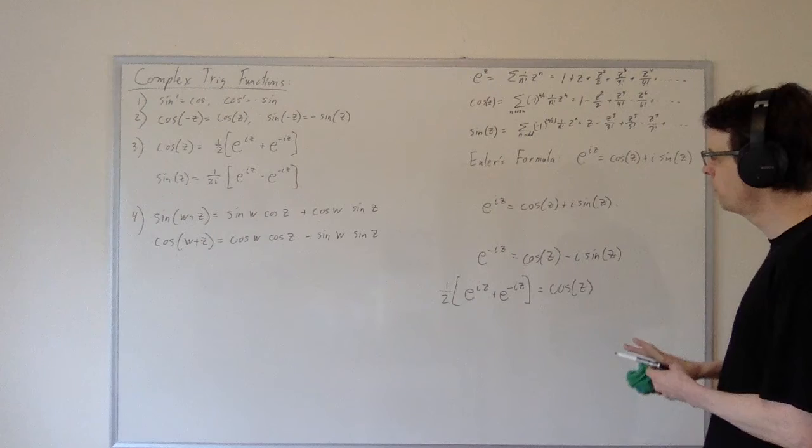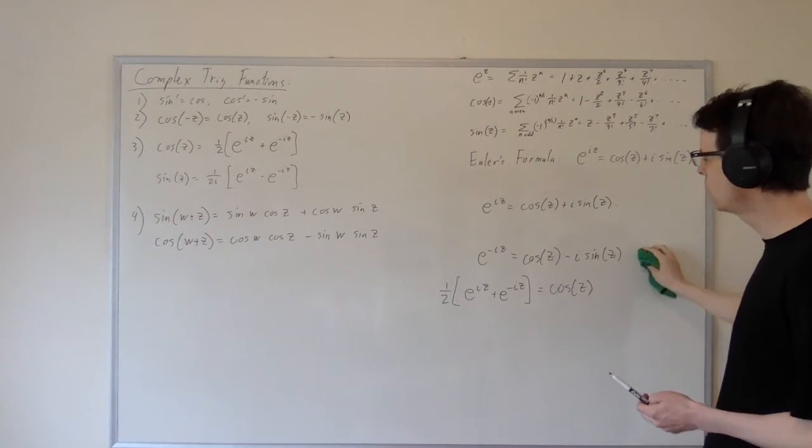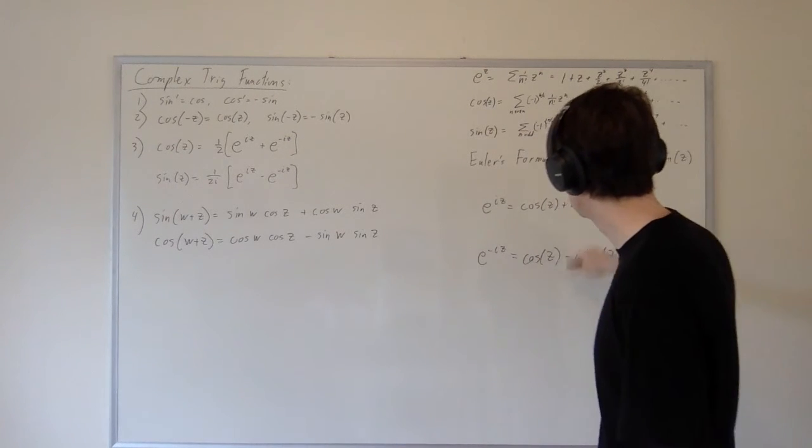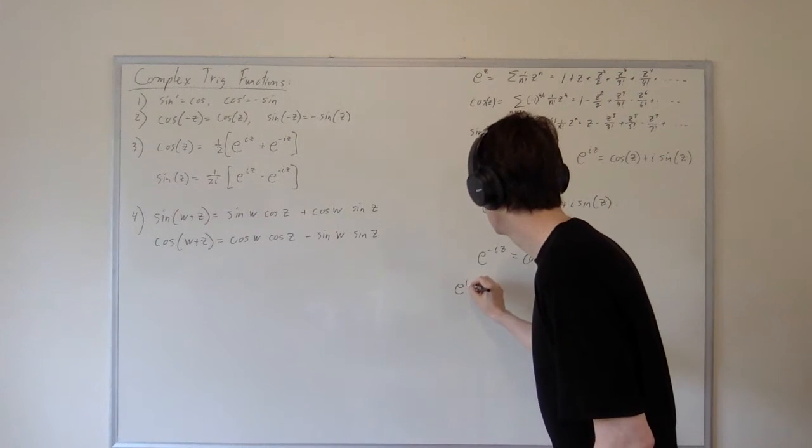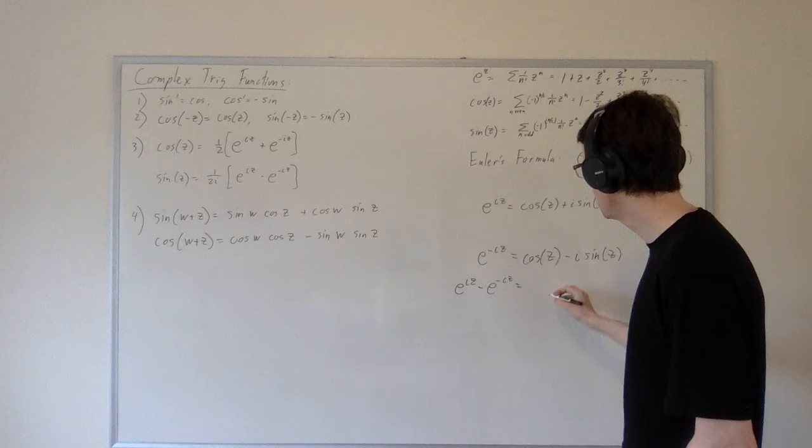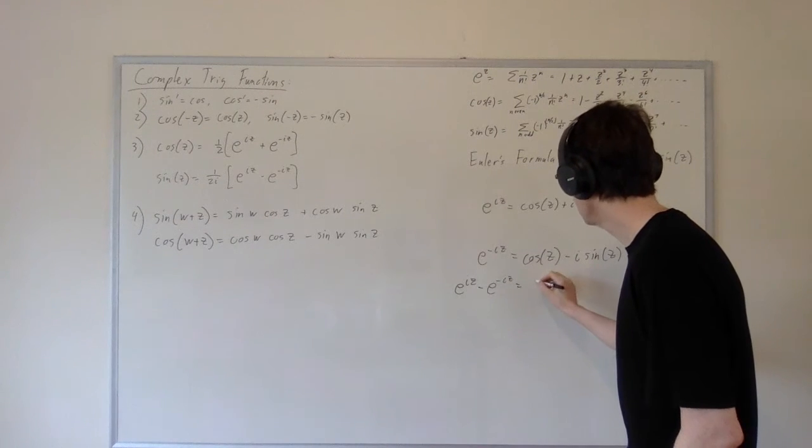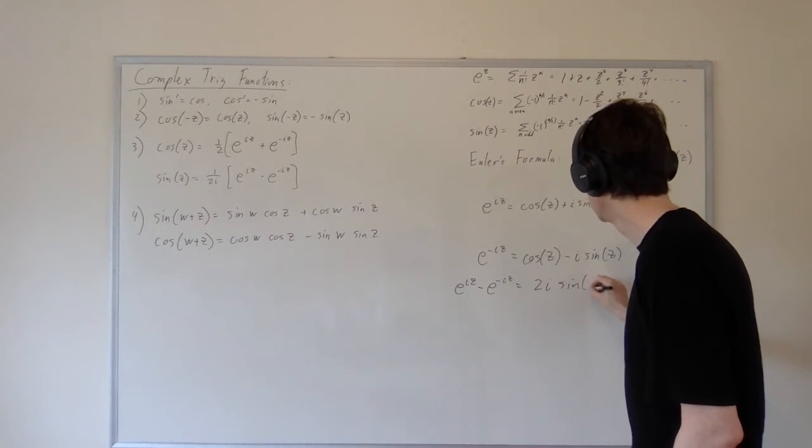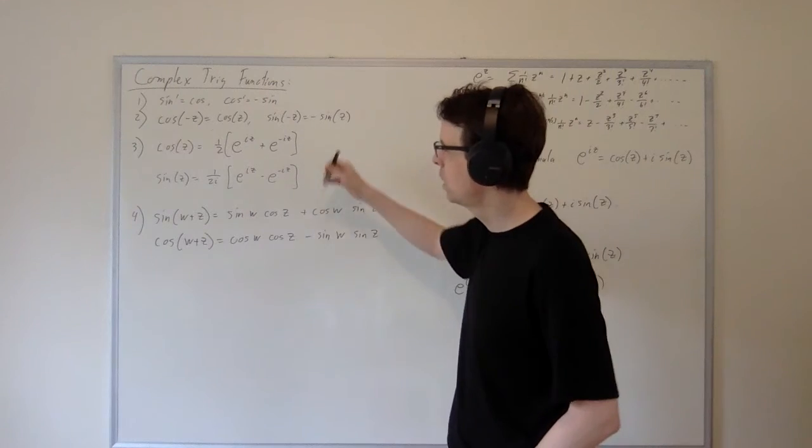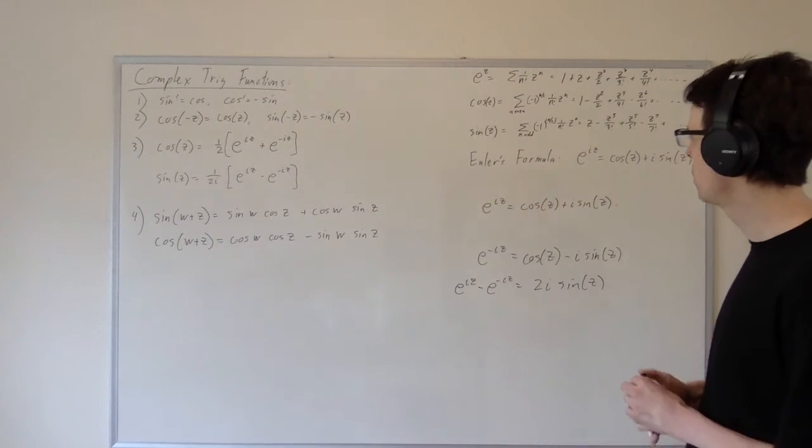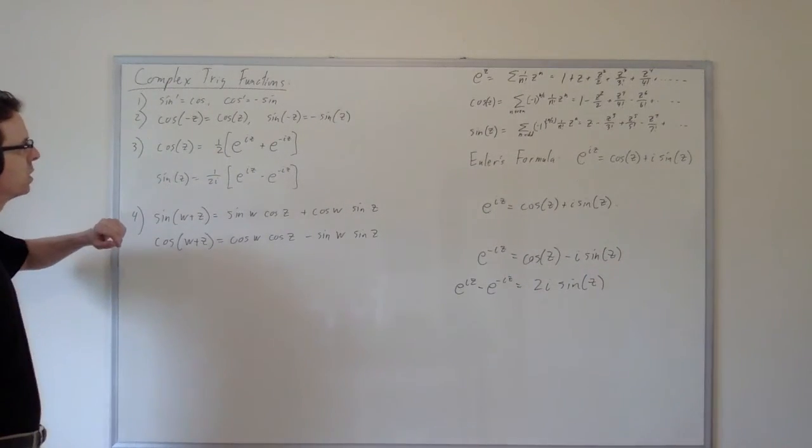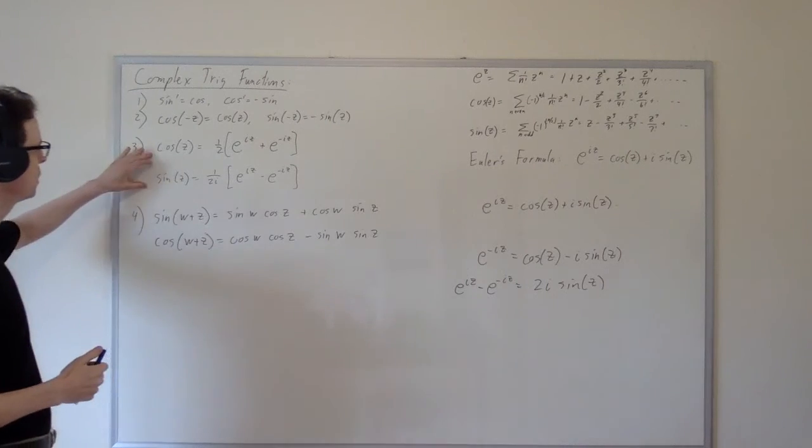The second equation is equally easy. All we have to do instead of adding these equations and dividing by two, we have to subtract these equations and divide by 2i. So let me skip the dividing by 2i because it's confusing and simply show what happens when we subtract these two equations. When we subtract these two equations, the cosines cancel and we get 2i sine z. So this minus this is 2i sine z. And then of course just divide both sides by 2i and we get this identity. So very simple consequences of Euler's formula give us interesting formulas for cosine z and sine z in terms of the exponential function. So that's a little bit surprising.